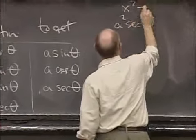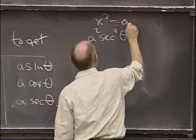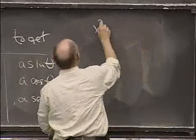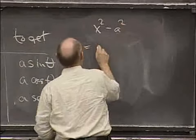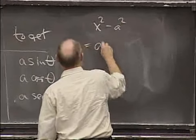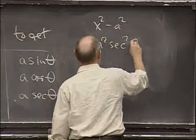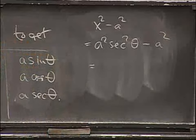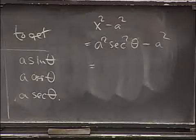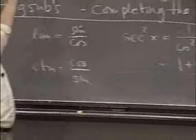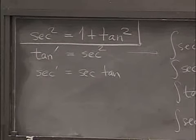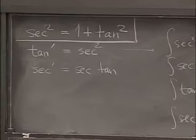so x squared minus a squared, sorry. Let's see what happens when I make that substitution. x squared minus a squared is a squared secant squared theta minus a squared under this substitution. That's secant squared minus 1. Well, put the 1 on the other side. And you find tangent squared coming out. So this is a squared times the tangent squared of theta.